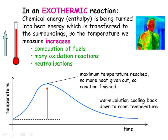The graph here shows how the temperature increases during an exothermic reaction. The temperature increases as the reaction progresses until one of the reactants is used up. Then the reaction finishes and the temperature is at its maximum. After that, with no more heat being produced, the reaction mixture slowly cools back down to the temperature of the surroundings.